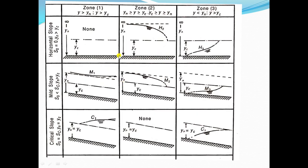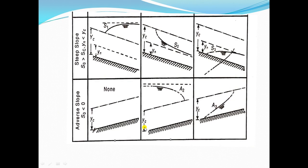This is the summary for all curves. In horizontal slope channels: two curves, H2 and H3. In mild slope channels: three curves, M1, M2, and M3. In critical slope channels: C1 and C3 only, as zone 2 does not exist. In steep slope channels: three curves, S1, S2, and S3. In adverse slope channels: two curves only, A2 and A3, since zone 1 does not exist.